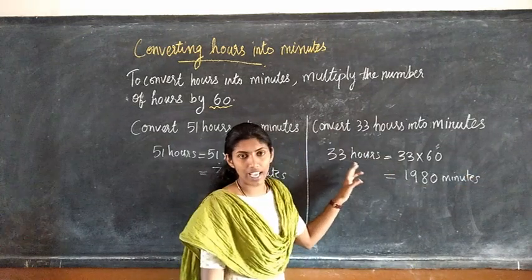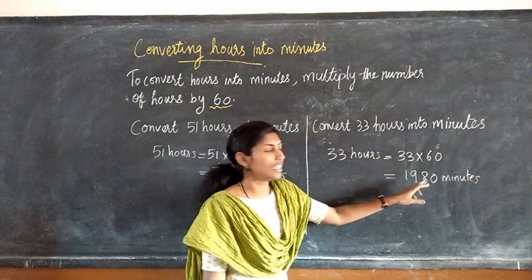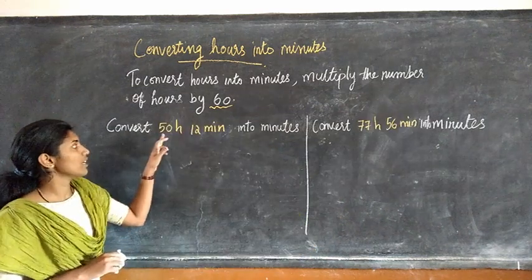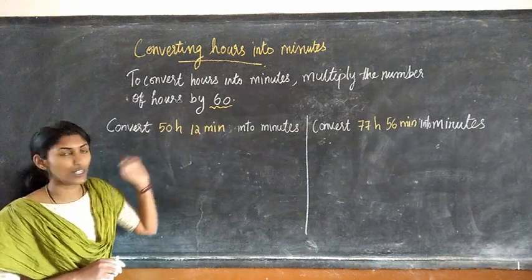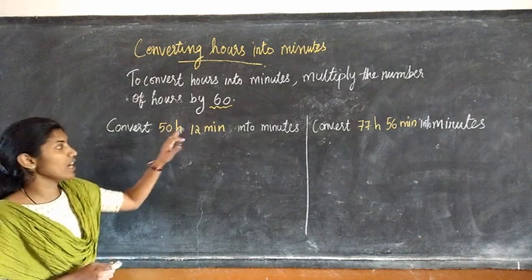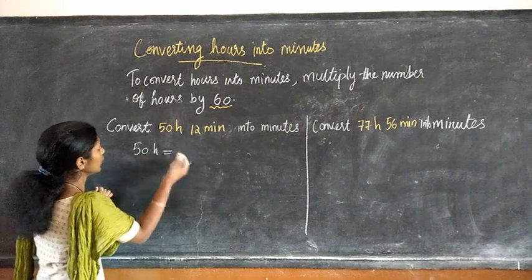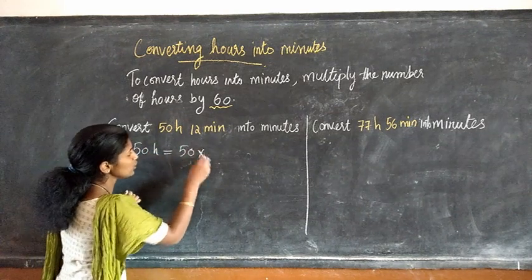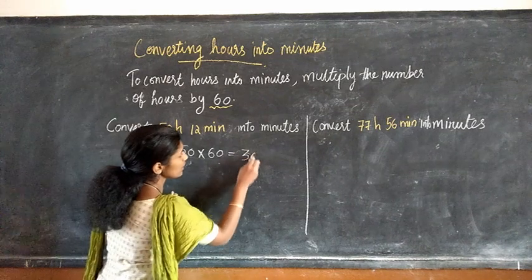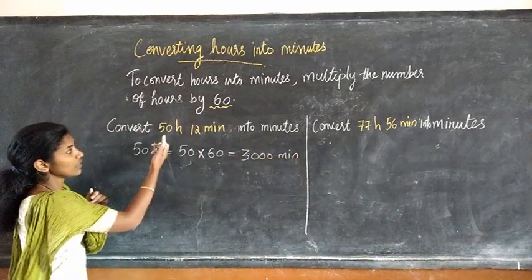Moving to the next question: convert 33 hours into minutes. So 33 hours equal to 33 into 60. When we multiply this number, we will get 1980 minutes. Once again, 33 hours equal to 1980 minutes.